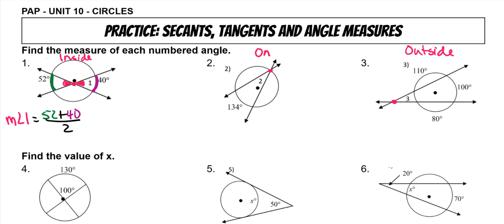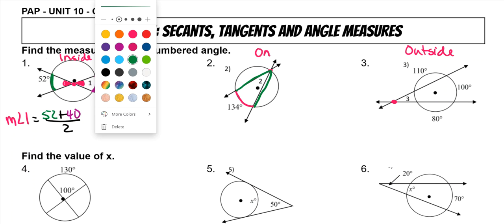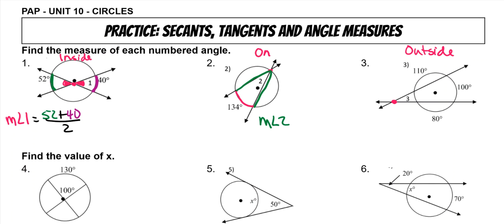Now for number two, this is basically an inscribed angle. It's not technically, because it's formed by two secants, but it's done the exact same way. So we have this arc and this angle, and you would just divide by two. So to find the measure of angle two, you would do 134 divided by two. It's just another way of having inscribed angles.